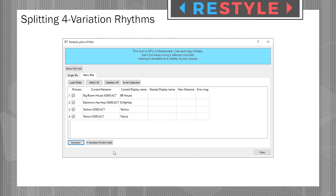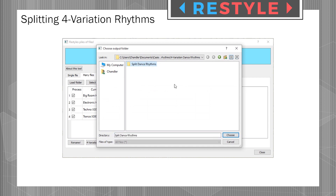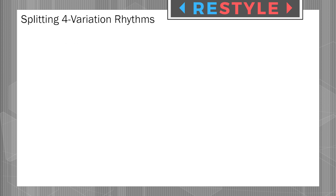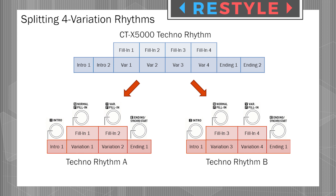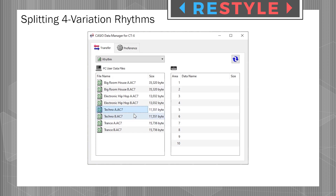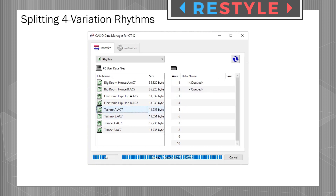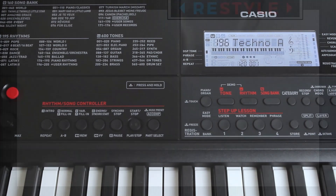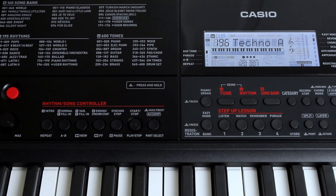With ReStyle's automated rhythm split feature, it's now possible to divide these four-variation source rhythms into two separate two-variation rhythms, allowing owners of less advanced Casio models to import each half of the original rhythm into adjacent slots in internal memory. By switching between these two split rhythms, these Casio users can easily access all of the material contained in the original four-variation rhythm.